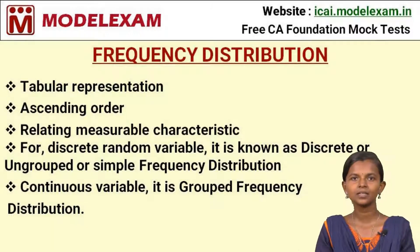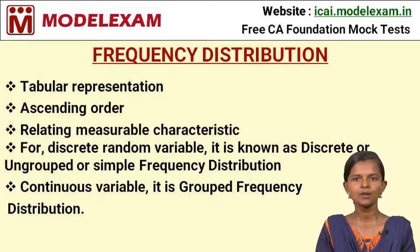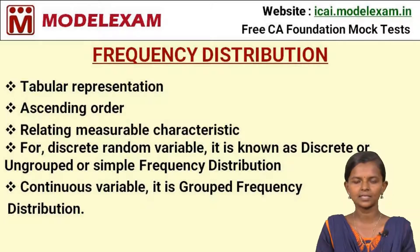Frequency distribution is a method where data is represented in tabular form. The collected data are arranged in ascending order, and then the frequency distribution is done for relating the measurable characteristic. We collect only quantitative data; even if the data is qualitative, we convert it into values so that the data can be related using measurable characteristics.